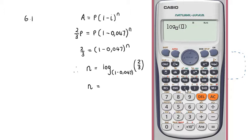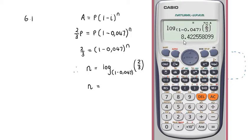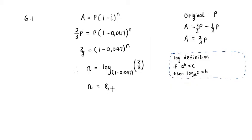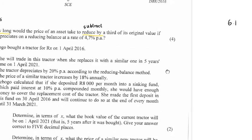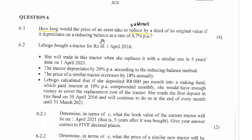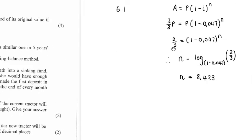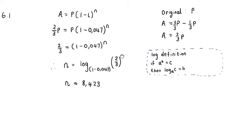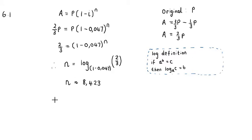We're going to insert into our logarithmic function on the calculator, choosing the option where we can insert both the base and the input. The base is 1 minus 0.047, and the input is the fraction 2/3. That gives us approximately 8.4225, so N is approximately 8.42. Since interest was per annum, we're looking at years, and therefore it's going to take 8 years.